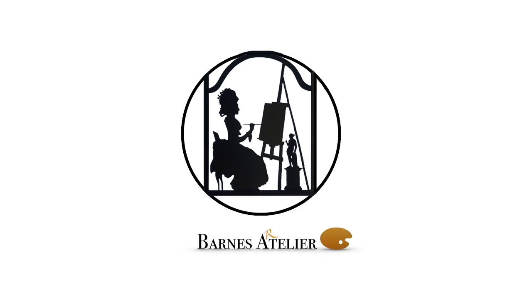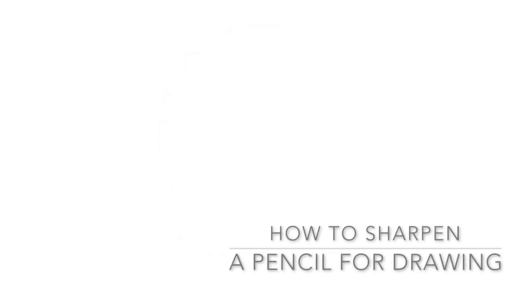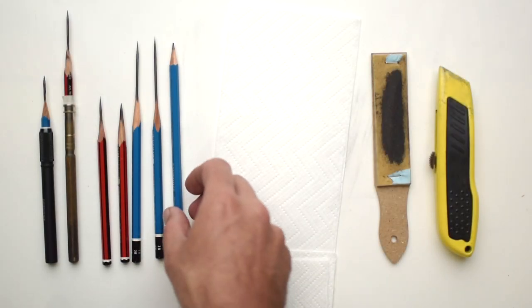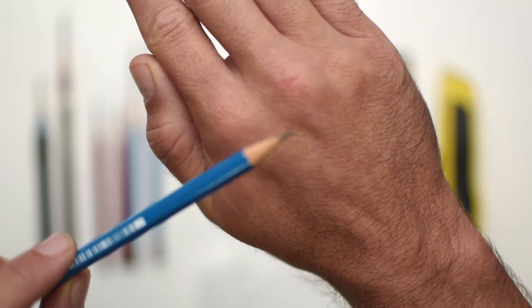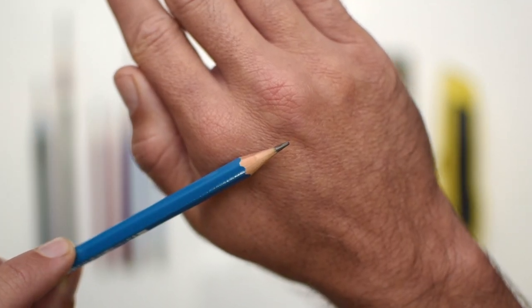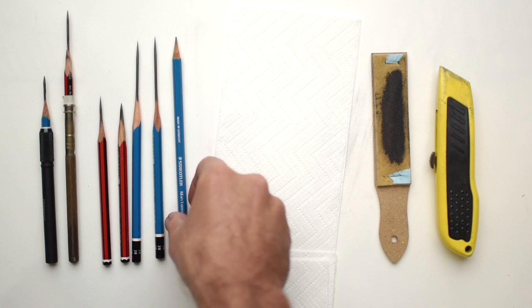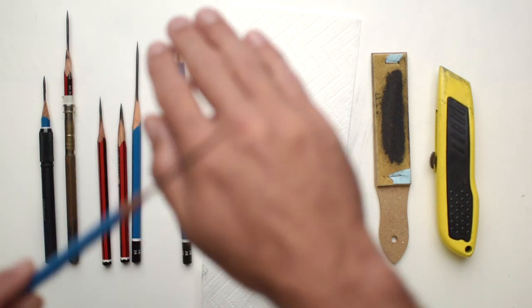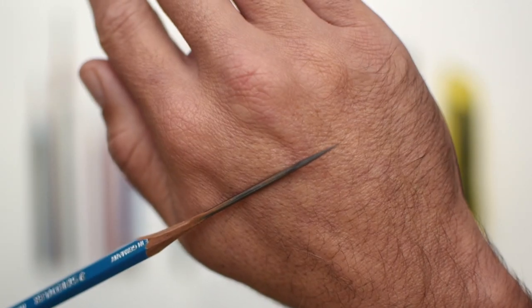You're watching a Barnes Atelier Art Tutorial. Today I'm going to show you how to take a pencil that normally comes with a point like this one and sharpen it to one that we use for drawing that's nice and sharp with a point like this one.